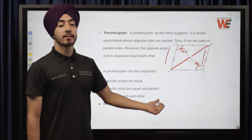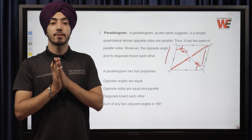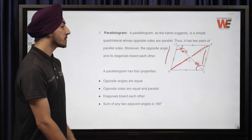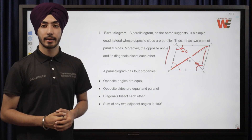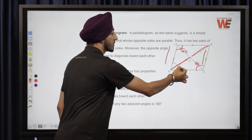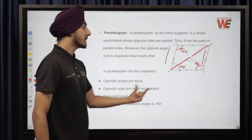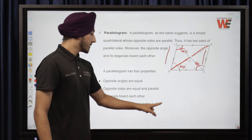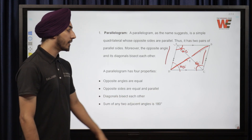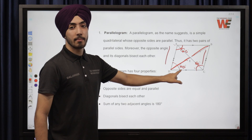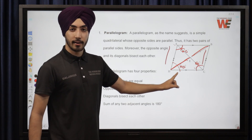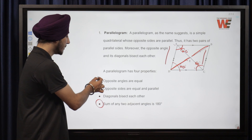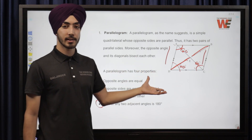The fourth property is that the sum of any two adjacent angles is 180 degrees. This property is very important for solving questions — most questions arise from this property. Adjacent angles which are side by side have a sum of 180 degrees, or we say they are supplementary. So if one angle is 60 degrees, the adjacent angle is 120 degrees, because 180 minus 60 equals 120. These two properties — opposite angles equal and adjacent angles supplementary — are the most useful for solving questions.